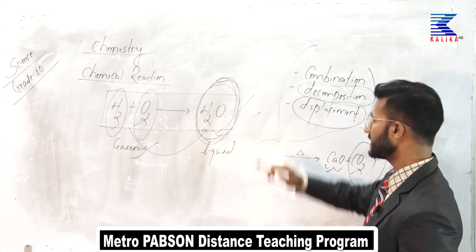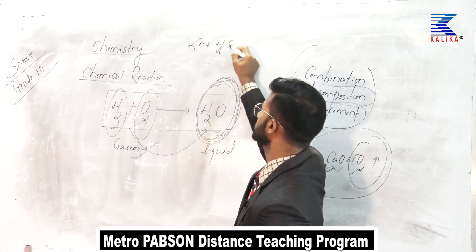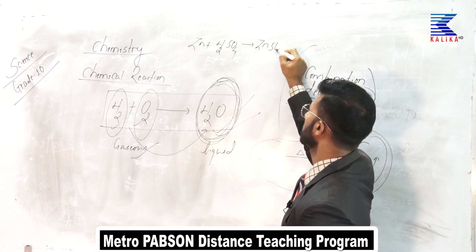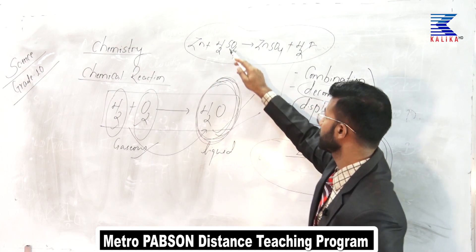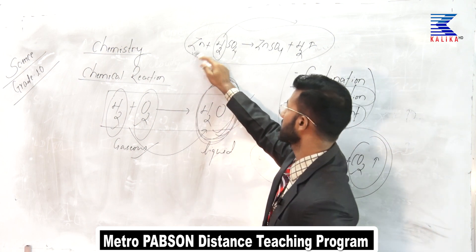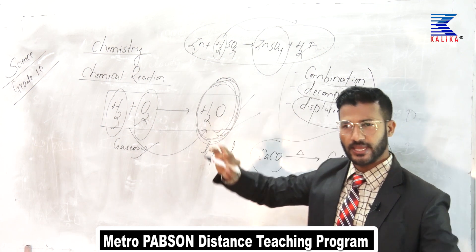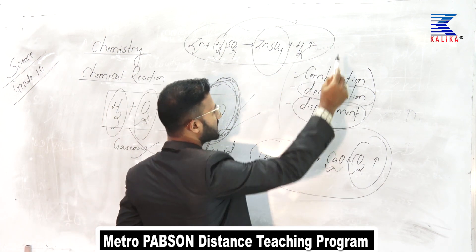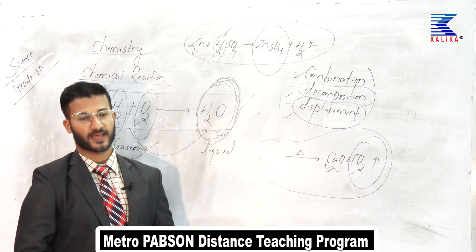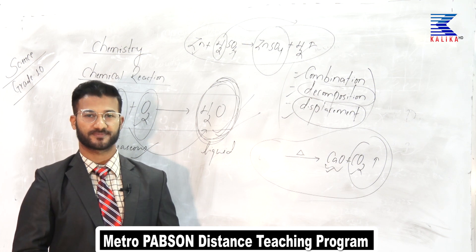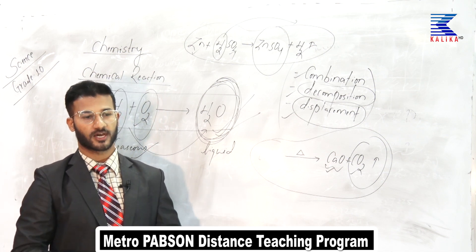The third type is displacement chemical reaction. Whenever zinc metal is reacted with sulfuric acid, it forms zinc sulfate along with hydrogen gas. In this change, hydrogen is displaced — zinc reacts with the sulfate radical to form zinc sulfate. Any kind of chemical change that includes combination, decomposition, or displacement is called a chemical reaction. Chemical reaction means a kind of chemical change which occurs due to the displacement, decomposition, or combination of reactant molecules.